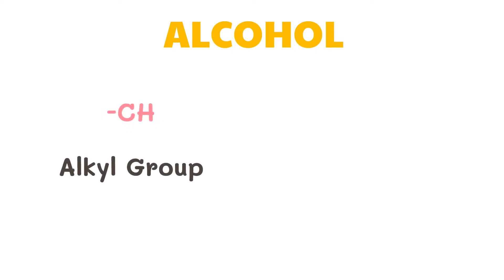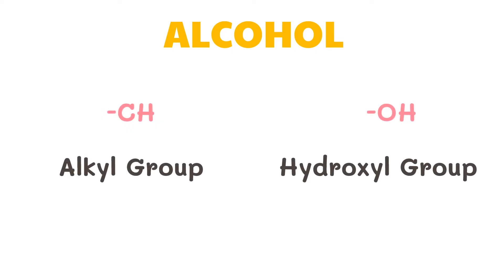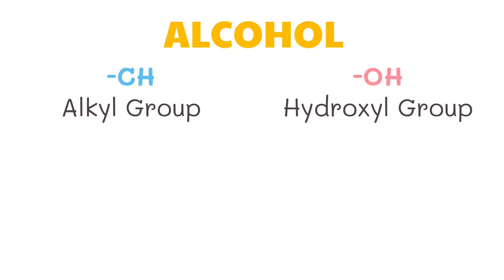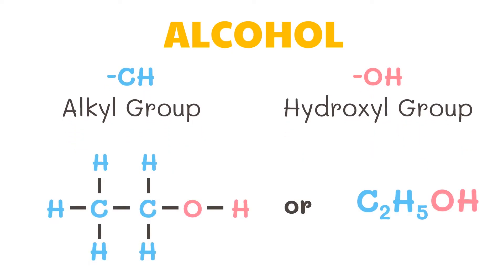An alcohol molecule consists of two parts. The first one has the alkyl group, and the other has the hydroxyl group. For example, ethanol, the principal ingredient in alcoholic beverages, is an alcohol. It has an alkyl group and a hydroxyl group.